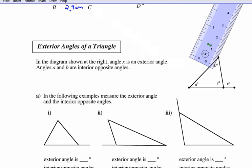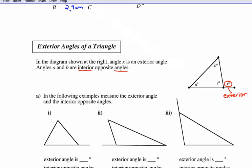Now: exterior angles of a triangle. In the diagram, angle x is the exterior angle. Angles a and b are called interior opposite angles — they are interior to the triangle and opposite to x (not beside x). So x is called the exterior angle, and a and b are both interior opposite angles. They have a special property we're about to investigate.